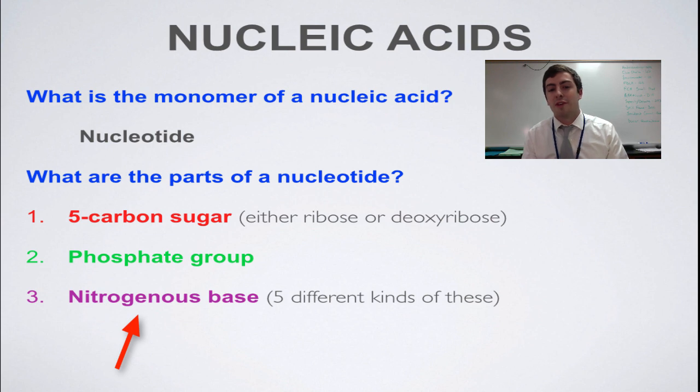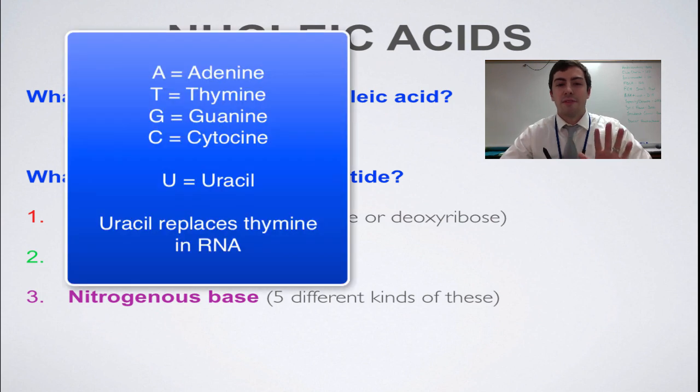Our 5-carbon sugar can either be a ribose, the R in RNA, or the deoxyribose, the D in DNA. The phosphate group is going to stay the same in both molecules, but the nitrogenous base will change and determine what it is. You have five different types.